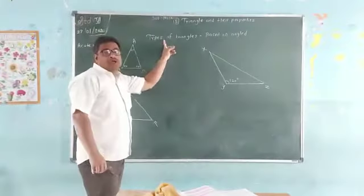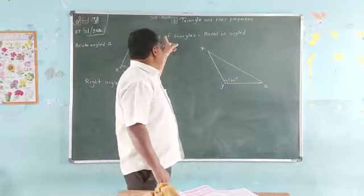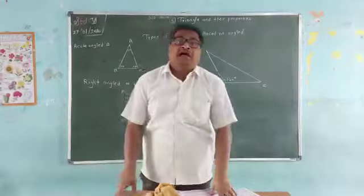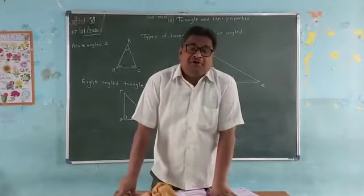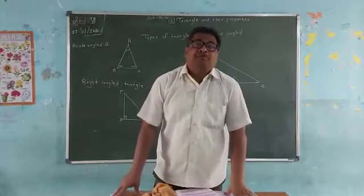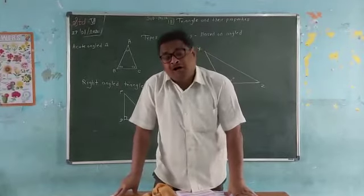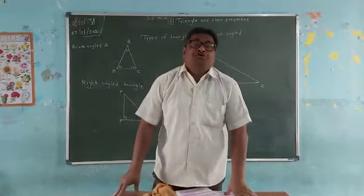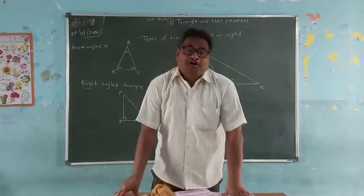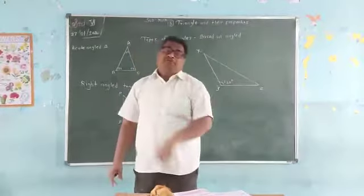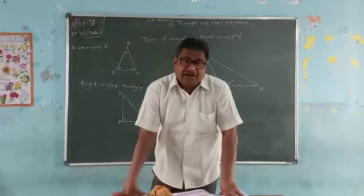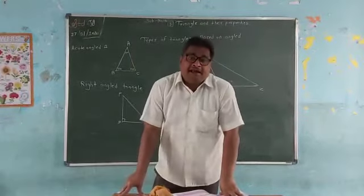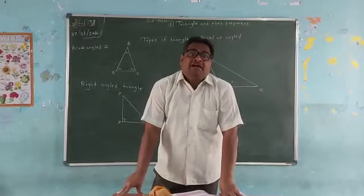We are going to see now the types of triangle based on the angle. Last video, you have seen the types of triangle based on the side. Now, you are going to see the types of triangle based on angle. There are three types of triangle: acute angle triangle, right angle triangle, obtuse angle triangle.